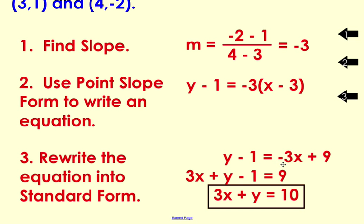So we're going to add three x to both sides of this equation, and we're going to add one to both sides of the equation. Our final answer in standard form is 3x plus y is equal to 10.